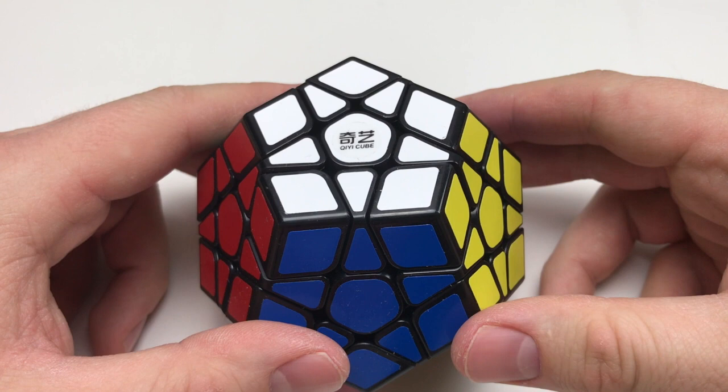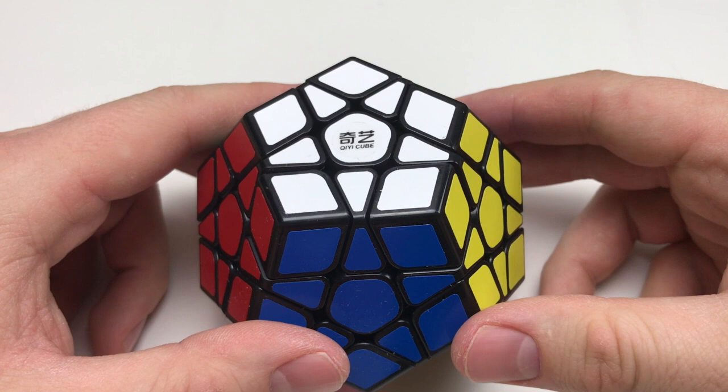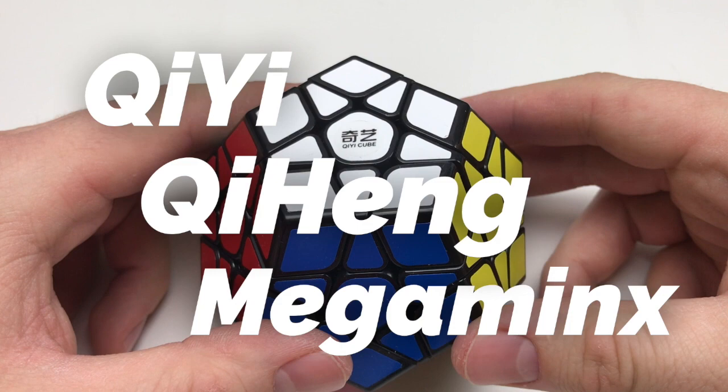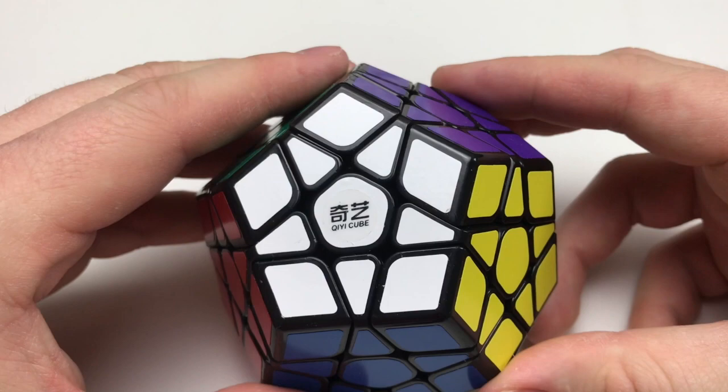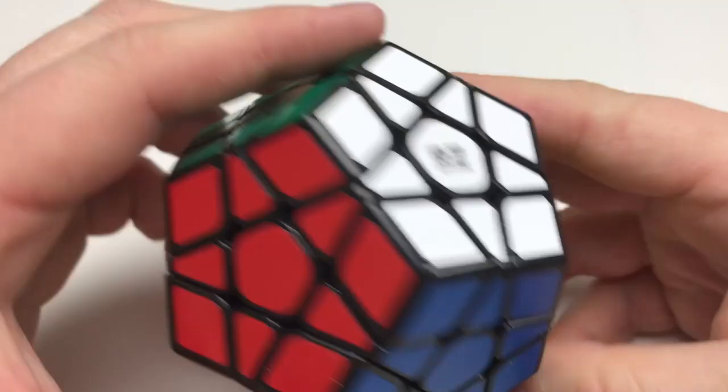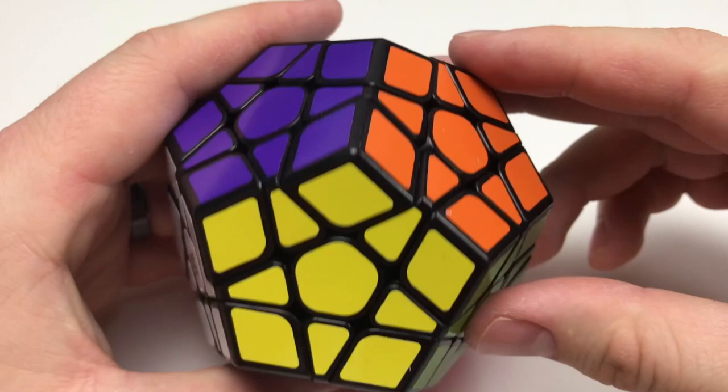Alright, so this is kind of odd. I ordered a Kilo Minx from The Cubicle and I ended up getting a Chi Yi Ki Hang Mega Minx. So this is definitely going back and I'm going to be getting my Kilo Minx. But for now, might as well do an unboxing and kind of do a review on it since I have it.